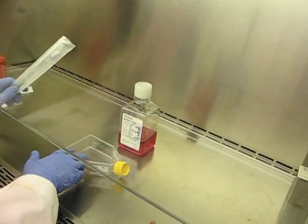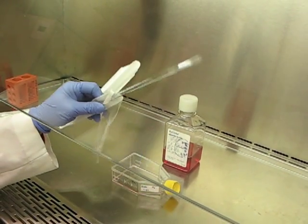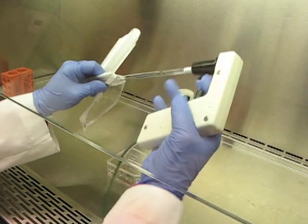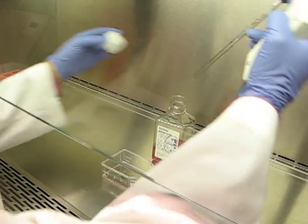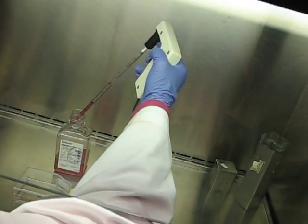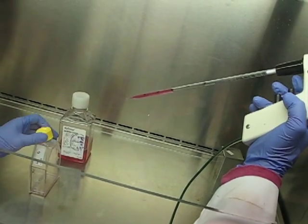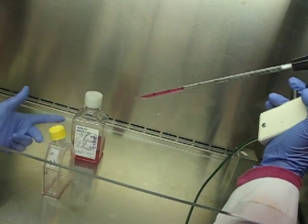This flask happened to be about ninety percent confluent, which is probably somewhere between four and five million HeLa cells. What I'm going to do is add three mils of media, so I'm doubling the amount of media that I'm adding compared to the amount of trypsin. But if you wanted a really concentrated cell suspension, you'd only use one and a half mils.